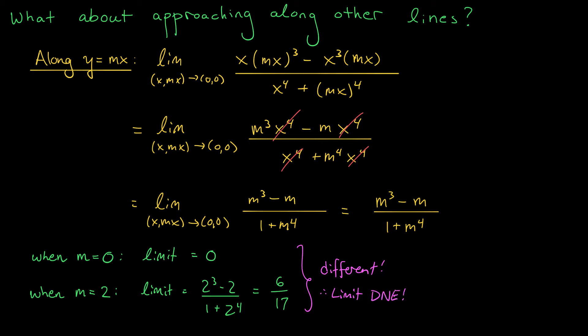Now, you might be wondering, what would we have done next if we had found that these limits were all equal to 0? Well, that's a good question, and we're going to get to that in the next video. The next step might be to try parabolic paths. Approach the origin along the parabola y equals mx², or x equals my². Two different types of parabolas. Fortunately, we don't have to deal with that situation in this example.